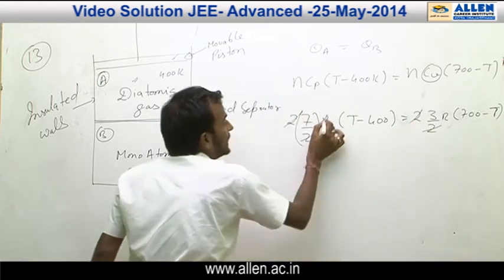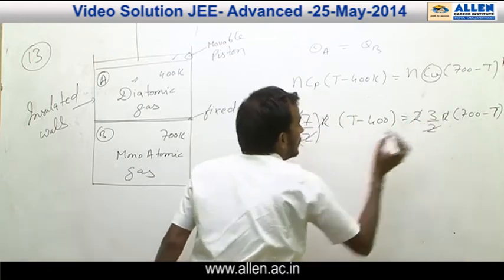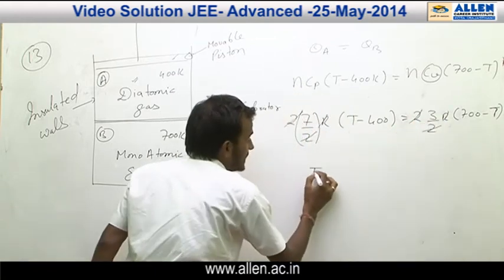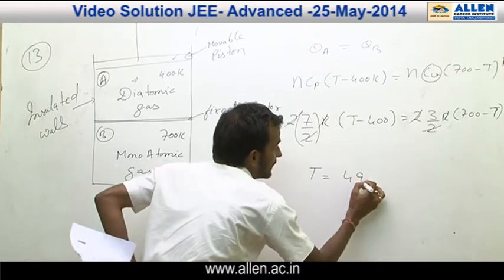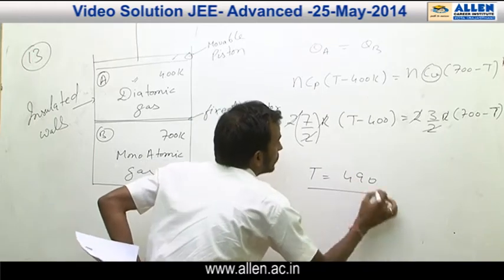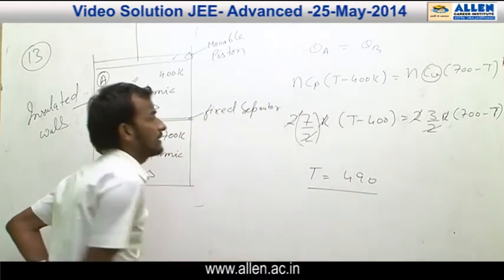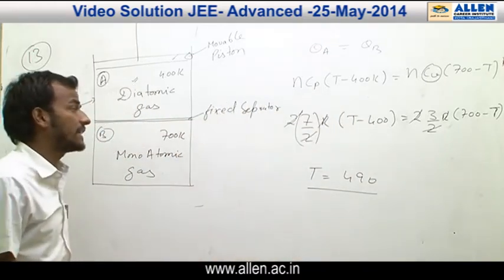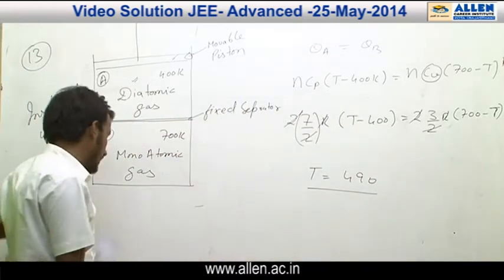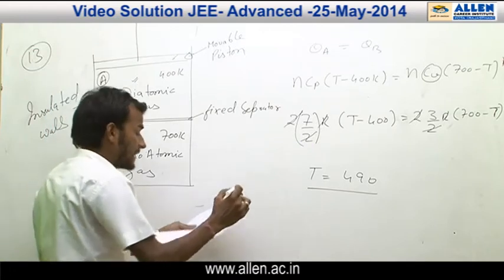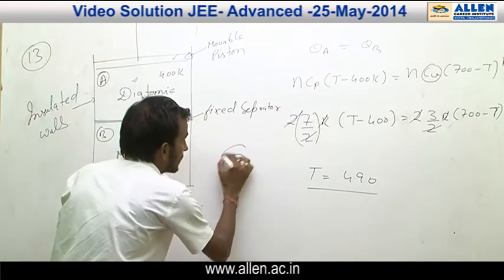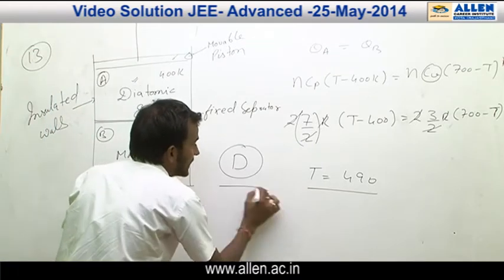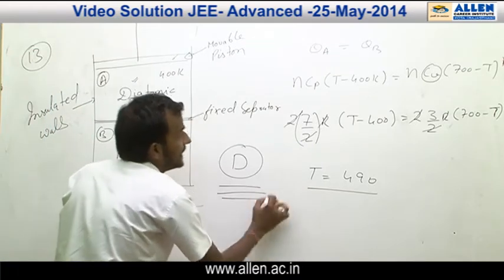By solving these two equations, T equals 490 K. This is option D in the paper. So the answer is D.